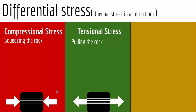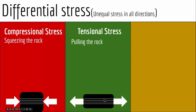Tensile stress is exactly the opposite of compressional stress — it is basically pulling the rock from both sides. Anything in the rock will get deformed in the opposite way to compressional stress. If you have elongated grains and apply tensile stress, in a direction 90 degrees to the tensile stress everything will shorten and get smaller, but in a direction parallel to the tensile stress everything will elongate and get longer. That is how tensile stress deforms rocks.